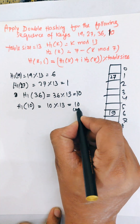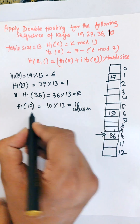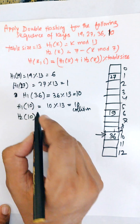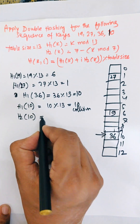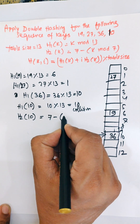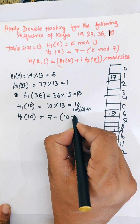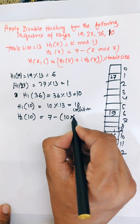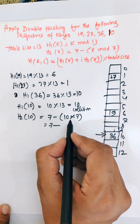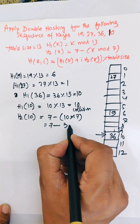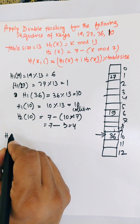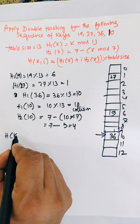When there is a collision, we need to find h2(k). h2(10) = 7 minus 10 mod 7 = 7 minus 3 = 4.